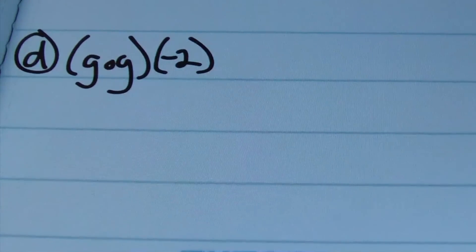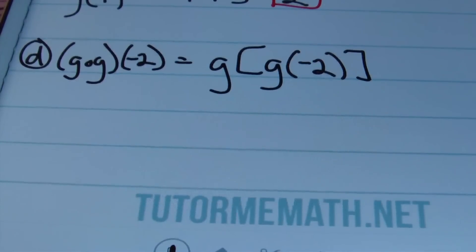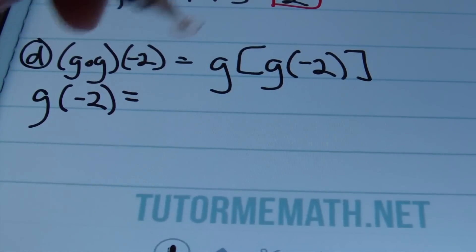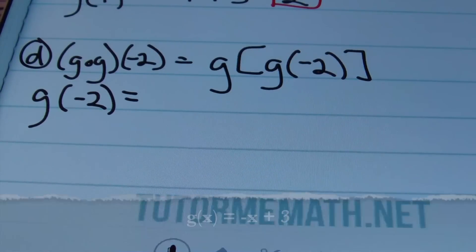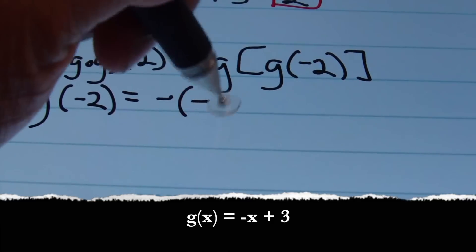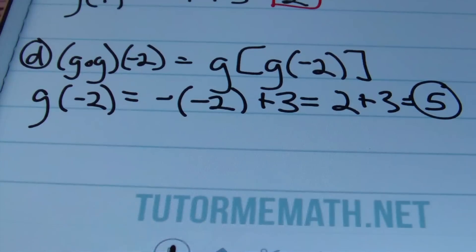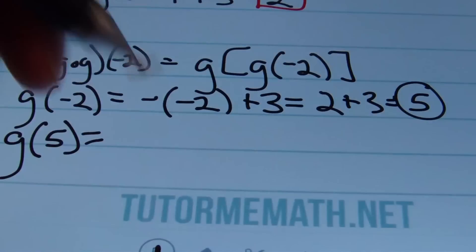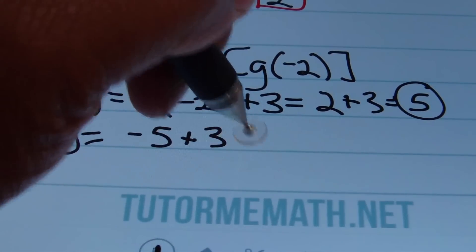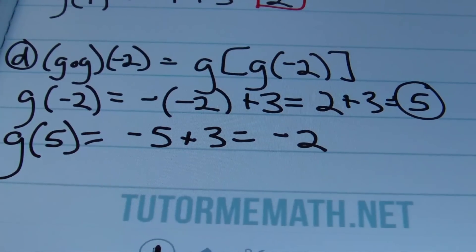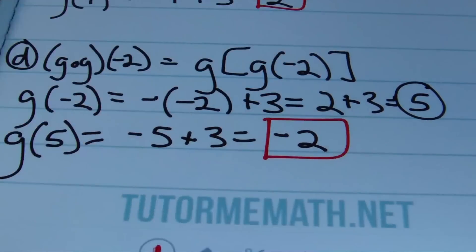Looking at 1D, we have G composite G of negative 2, which means I'll be plugging negative 2 into G, then taking that result and plugging it into G again. Finding G of negative 2 first — the G function is negative X plus 3, so this becomes negative negative 2 plus 3, which is 2 plus 3, giving a value of 5. Plugging this value of 5 back into G gives negative 5 plus 3, which equals negative 2. That's the answer.